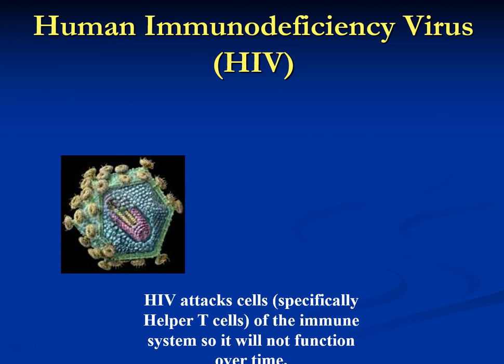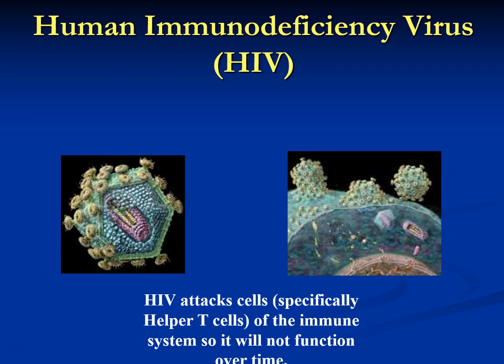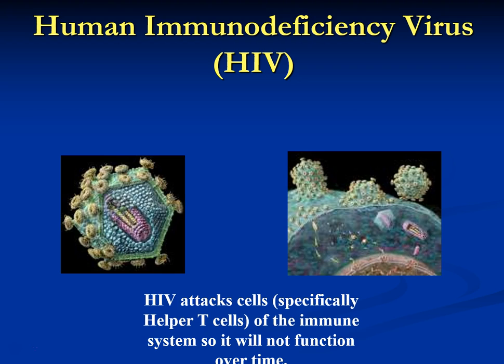HIV is a virus that specifically attacks cells of your immune system — specifically helper T cells. It tricks its way into immune system cells and takes over. When that cell explodes with the virus, the cell is gone. Since this virus attacks your immune system cells, the more active the virus is, the more your immune system is suppressed and the more likely you are to get other diseases. Those other diseases are what cause a person to die of HIV.